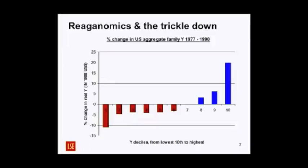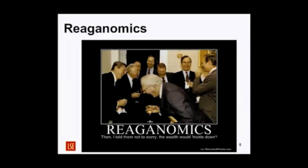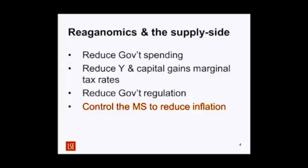We're hearing a lot about a squeeze on middle incomes in Britain now. The data in America shows the squeeze on middle incomes begins with Reagan or the end of the Carter administration. What did the Laffer curve do in terms of tax revenues — did they increase? Did the objective of reducing government spending and raising government revenue succeed? What happened to the US deficit under Reagan?